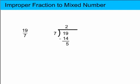So the answer is 2 with a remainder of 5. So the 2 becomes the whole number part of the mixed number. And the 5 becomes the numerator of the fraction, which is sevenths. So it's going to be 5 sevenths. So 19 sevenths is equivalent to 2 and 5 sevenths.